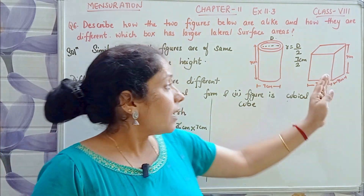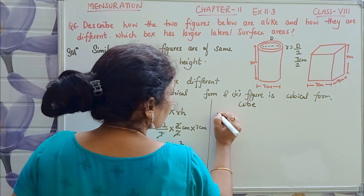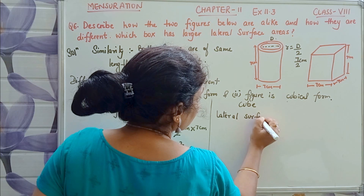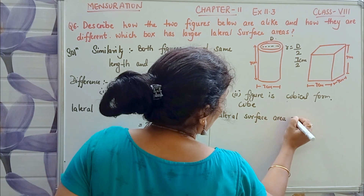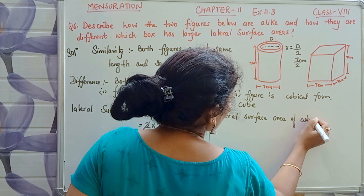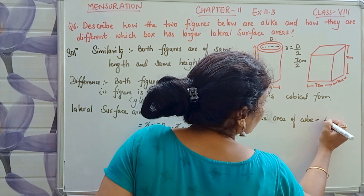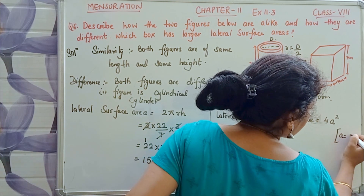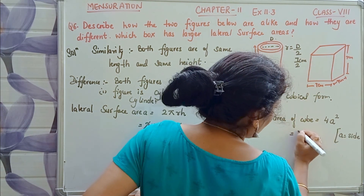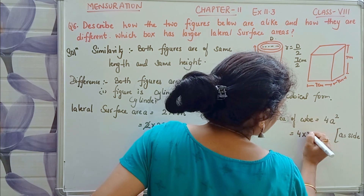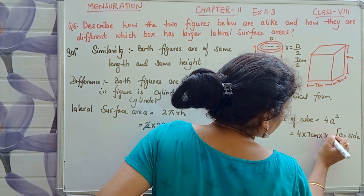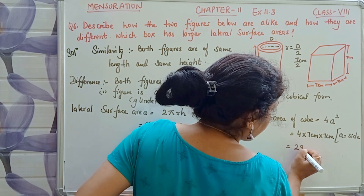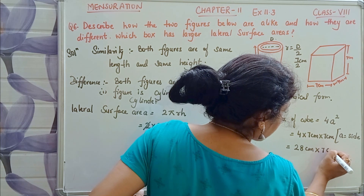Now the second figure is a cube. The lateral surface area of a cube is 4a squared. The side a is 7 centimeters. So that is 4 multiplied by 7 cm into 7 cm, which gives 28 into 7.